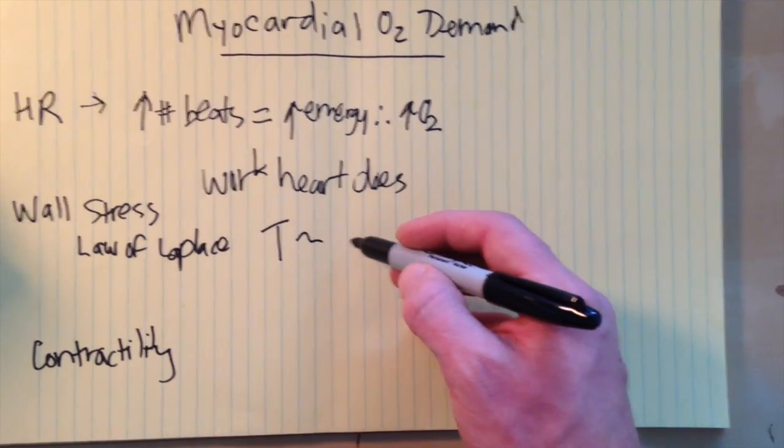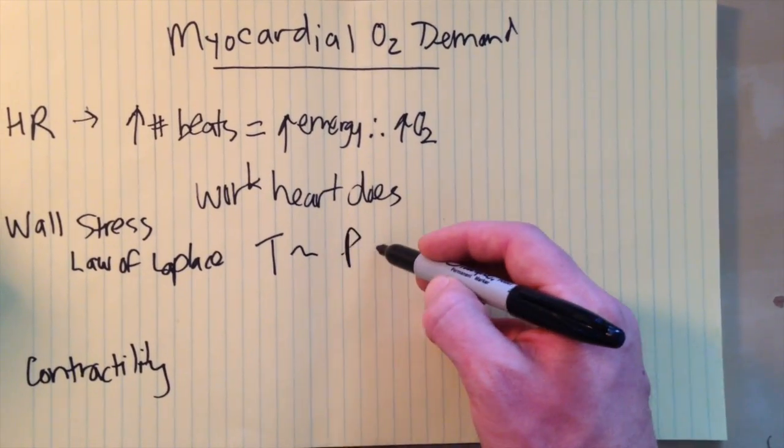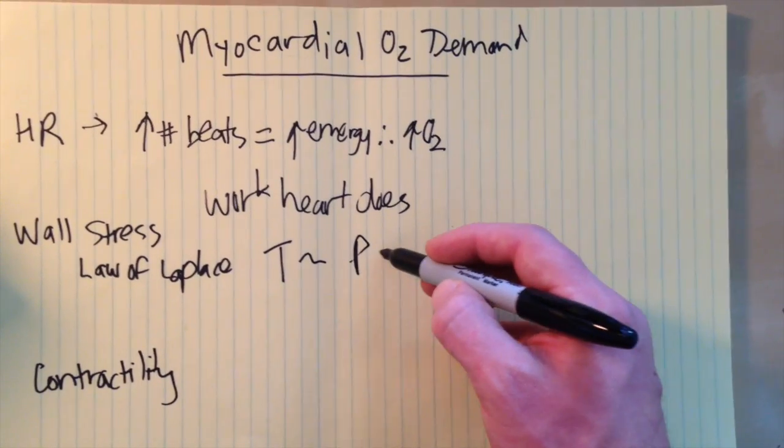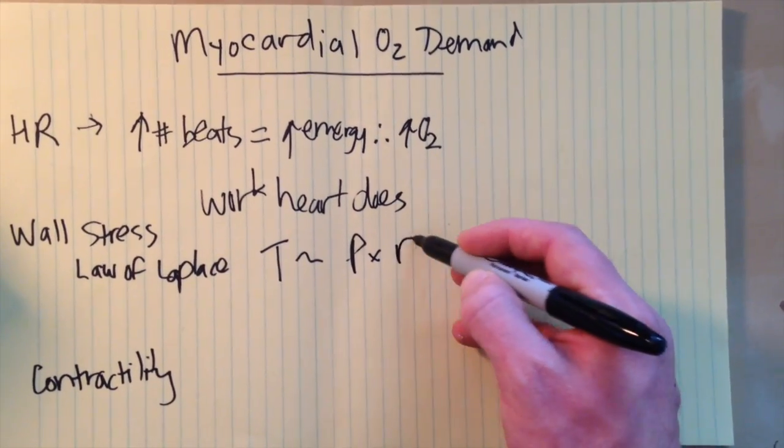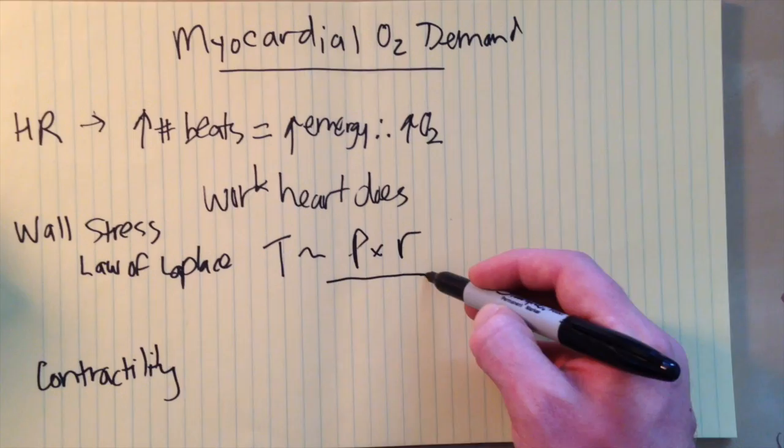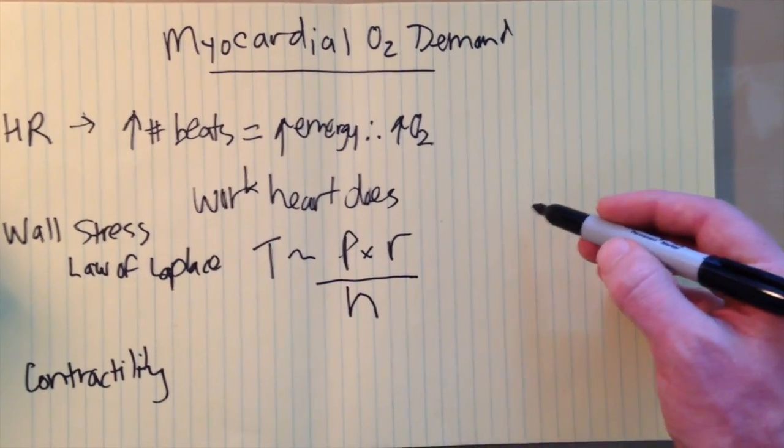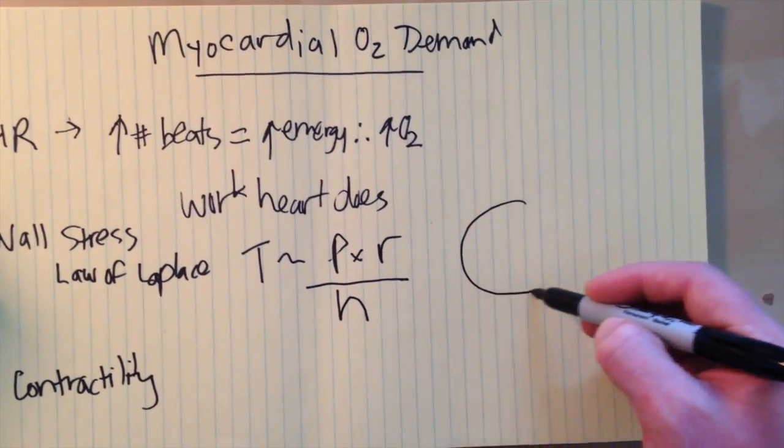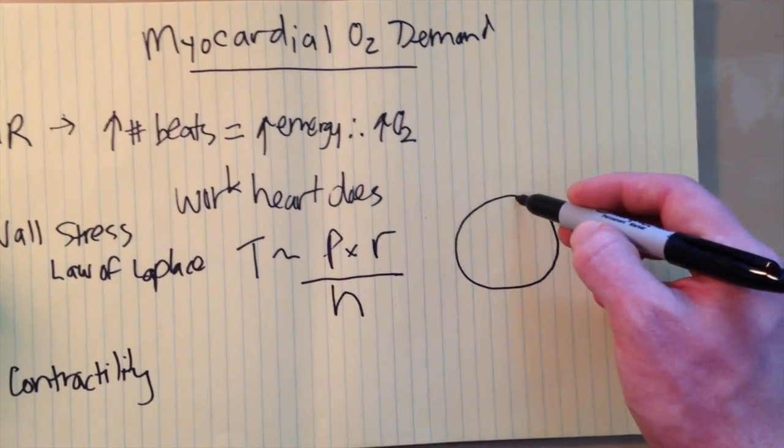So the tension or wall stress is related to the pressure or directly proportional to the pressure and the radius of the ventricle itself, inversely proportional to the thickness of that wall. I like to think of it in simplistic terms by looking at a circle.